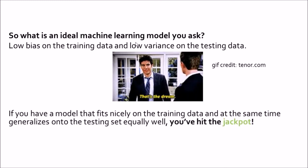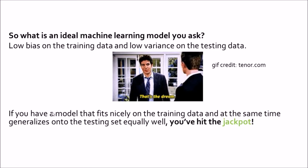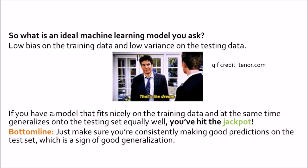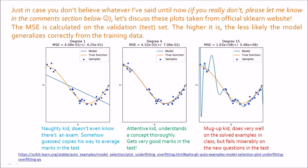If you have a model that fits nicely onto the training data and at the same time generalizes onto the testing set equally well, you have hit the jackpot. The bottom line: make sure you are consistently making good predictions on the testing set. This is called good generalization onto the testing set.